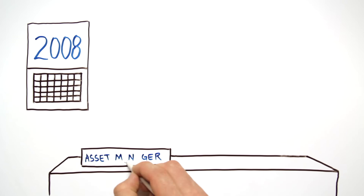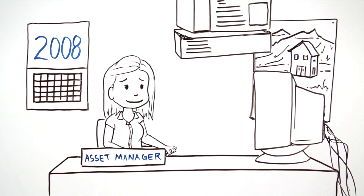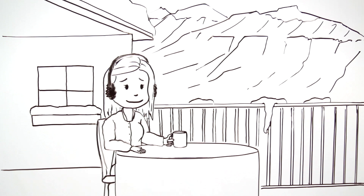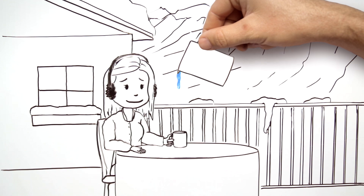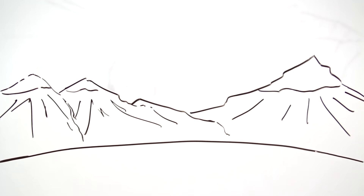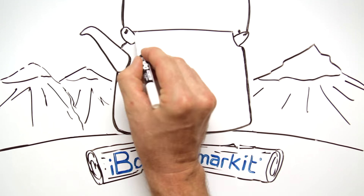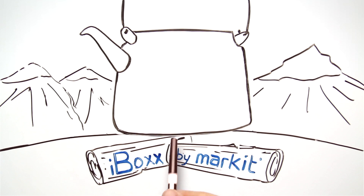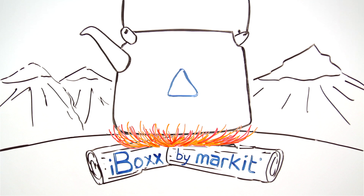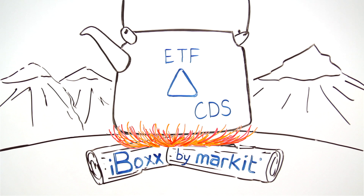Not so long ago, trading in global bond markets felt a little like pouring a glass of water in the mountains in the dead of winter. Since then, iBOX indices have helped to thaw the illiquid marketplace by giving rise to a fixed income liquidity triangle of ETFs, CDS and TRS.